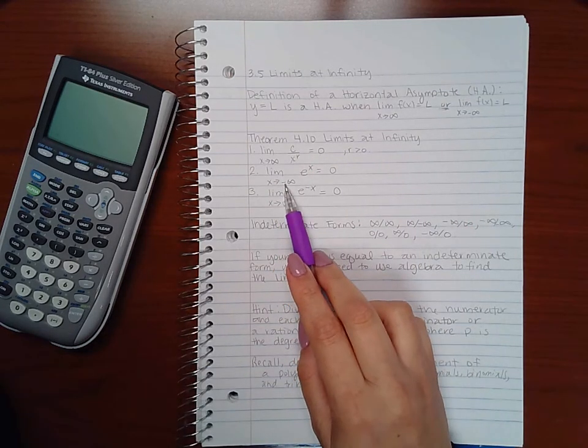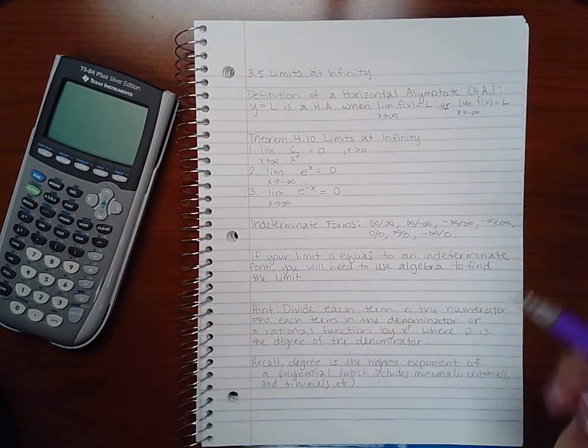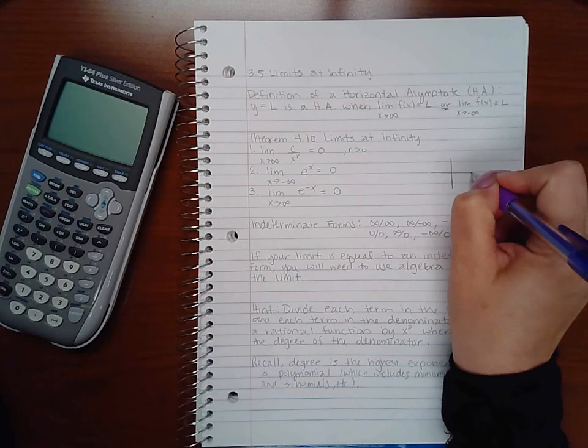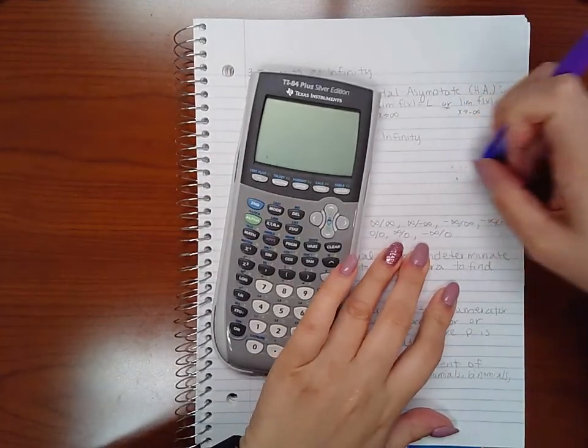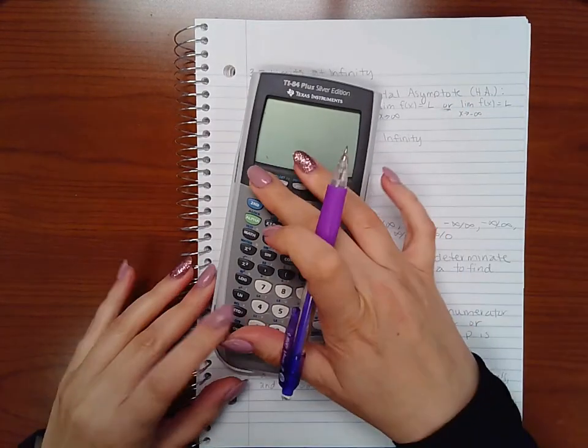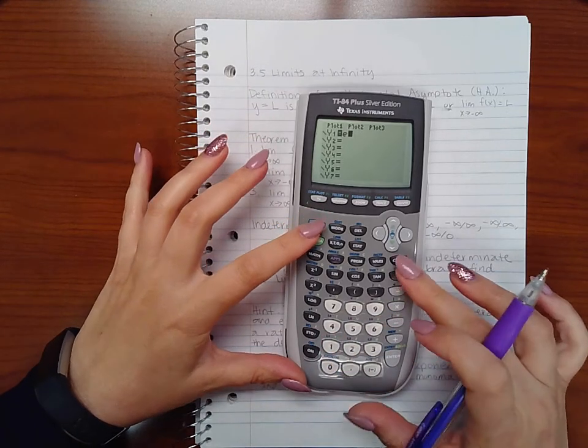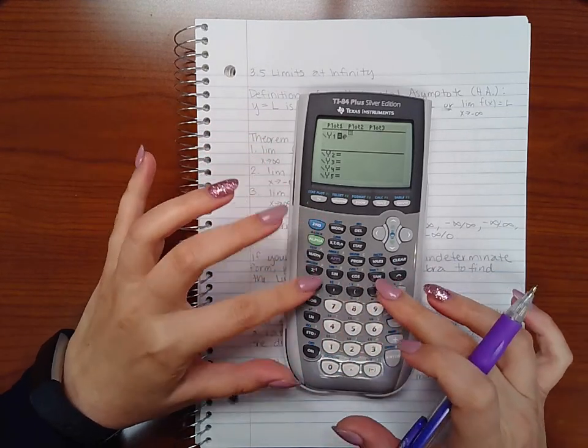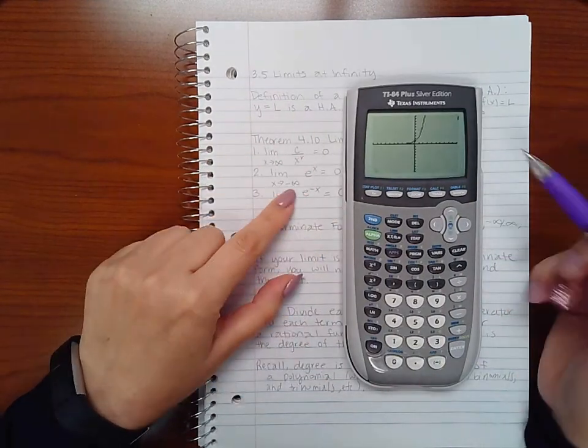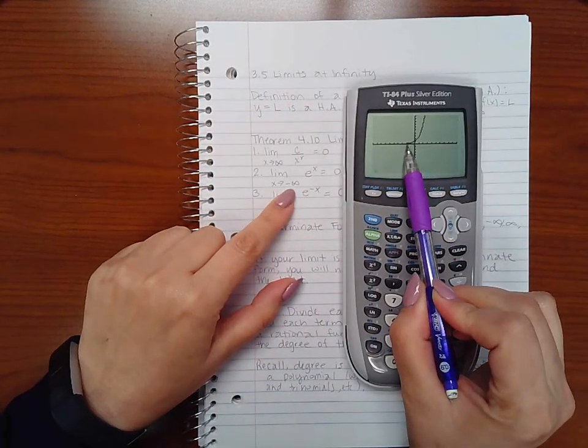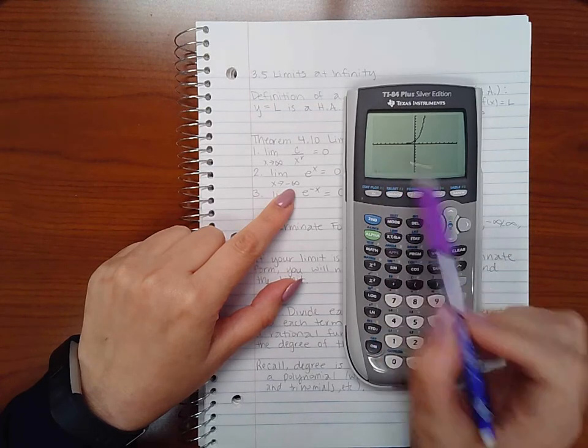Now, the limit as x approaches negative infinity of e to the x is zero, and you can see that by the graph. If you were to graph e to the x and watch how as x approaches negative infinity, as the x values go toward negative infinity, the y value is getting closer and closer to zero.